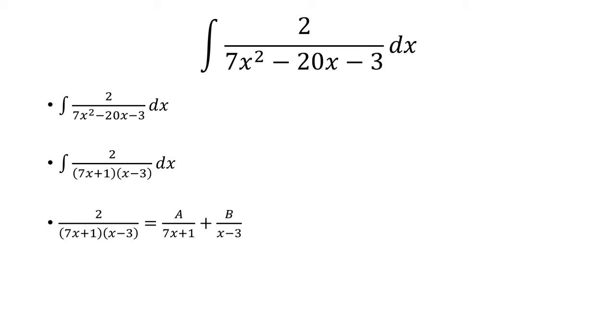And so we're going to use a partial fraction decomposition. We're going to break up each factor into the denominator for each fraction. And now we're going to multiply everything by 7x plus 1 times x minus 3.